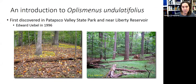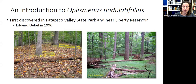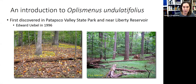A little introduction about the history of the invasion. Wavy leaf basket grass was first discovered in Maryland in Patapsco Valley State Park and near Liberty Reservoir in 1996. It took quite a while to figure out what they had — it had to go to the Smithsonian and then to an expert in Germany. Nothing was really done about it until a botanist with DNR heard about it in 2007 and went out to look. The original invasion had patches about the size outlined in yellow, but what they saw by then was basically an understory filled with wavy leaf basket grass — what can happen in about a decade of it going unchecked.